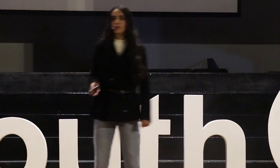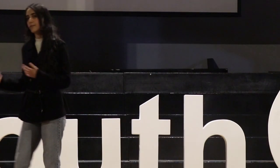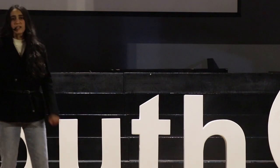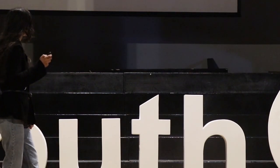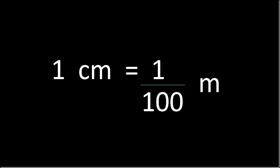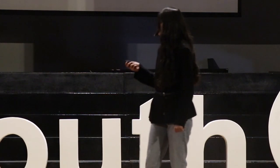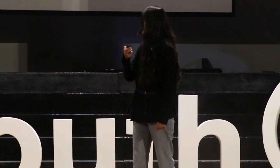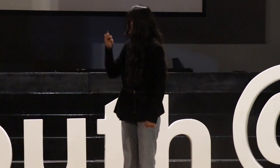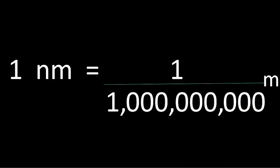Nano. The nanometer is actually just a unit of measure, just like a centimeter. So when we want to convert one centimeter to a meter, we divide by 100, which is basically just one and two zeros. Now, let's convert one nanometer to one meter. We're going to divide by one — but not three zeros, not six zeros, but nine zeros.